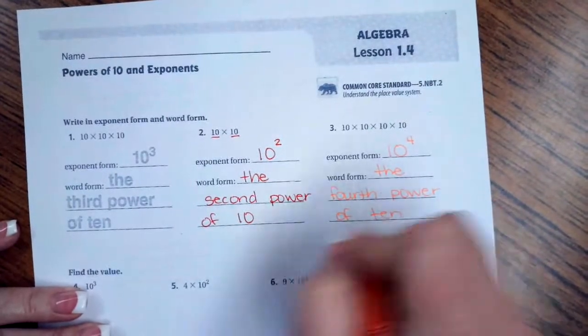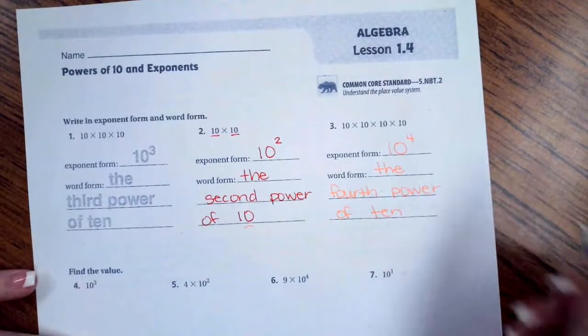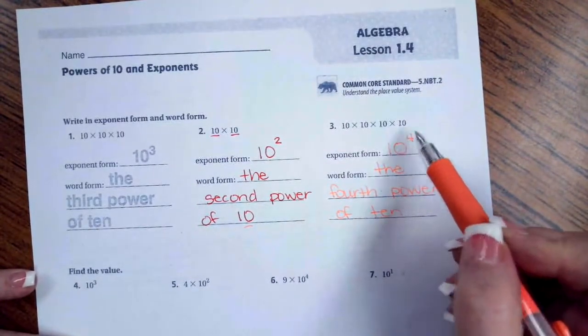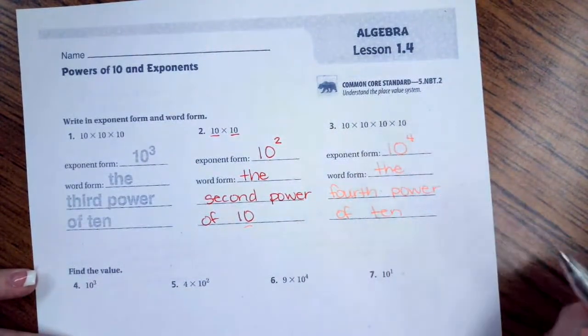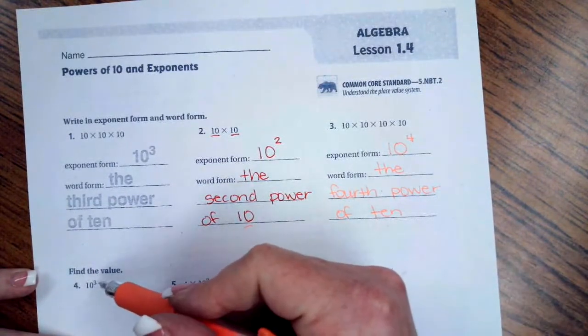Of ten. I probably should have written out 'ten' on this one, so just keep that in mind. Your exponent matches the number of tens. It also matches the number of zeros we will have.